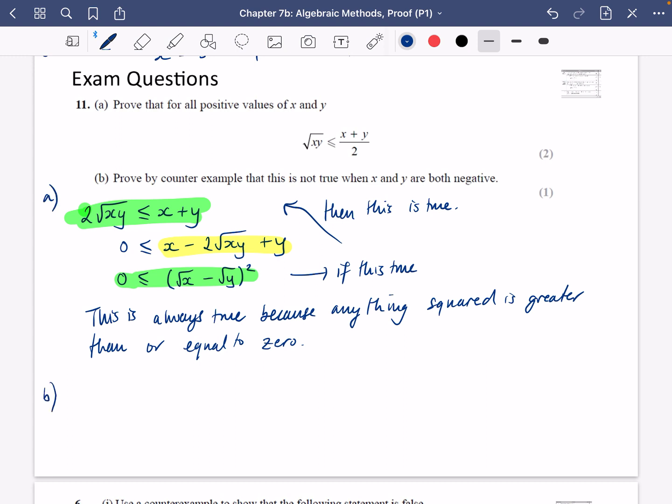So for part B of the question, it's nice and easy. It just says prove by counterexample that this is not true when x and y are both negative. So I'm just going to pick some values. Let x equal -2 and y equal -2. Then the square root of xy is the square root of (-2)(-2), which is the square root of 4, which is 2. And (x + y)/2 would be (-2 - 2)/2, which is -2. So here we have that √(xy) is greater than (x + y)/2. So this is our counterexample.